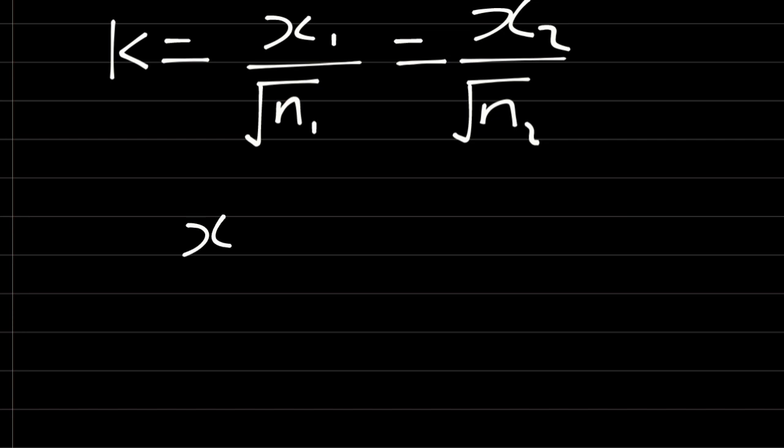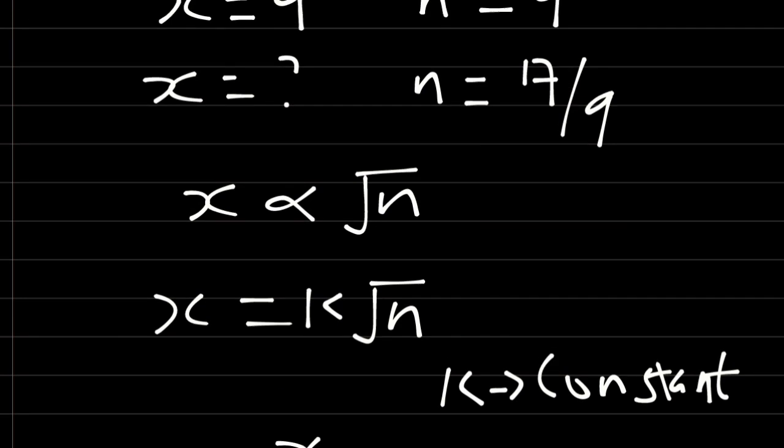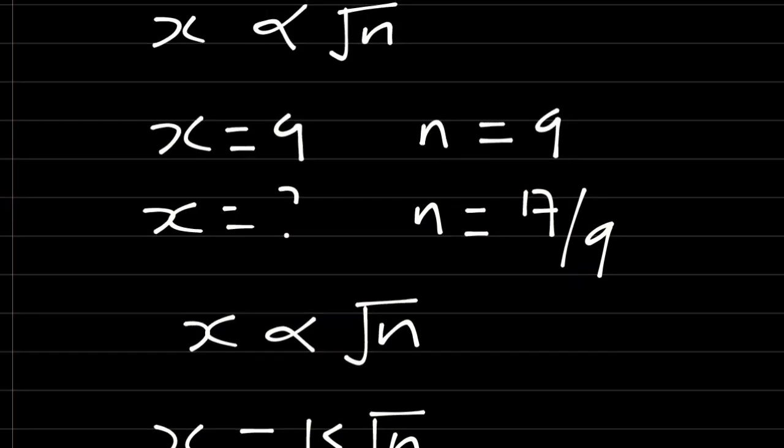Therefore, we have x1 over square root of n1 is equal to x2 over square root of n2. So from this, let's take this one to be x1, n1, x2, n2.